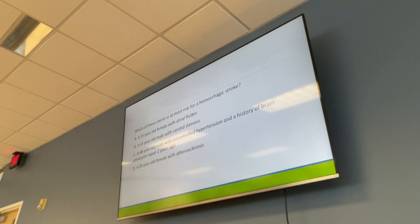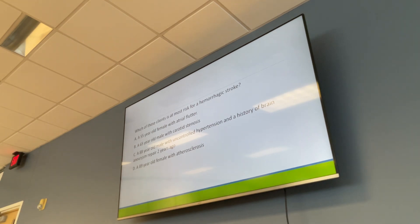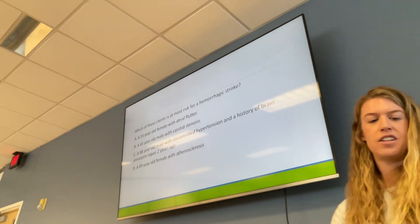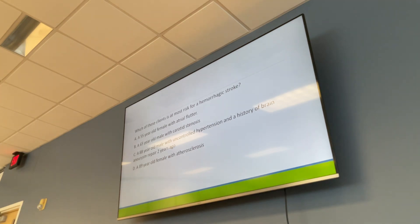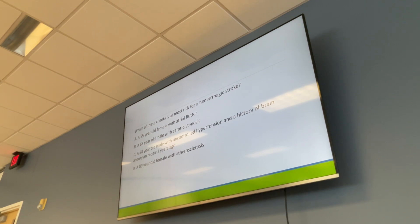Which client is most at risk for a hemorrhagic stroke? The answer is C — an 88-year-old male with uncontrolled hypertension and a history of repaired brain aneurysm. Uncontrolled hypertension puts strain on blood vessels, predisposing them to rupture. Options A, B, and D are at risk for ischemic stroke.